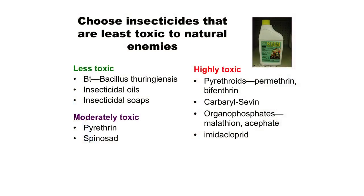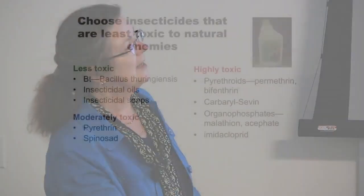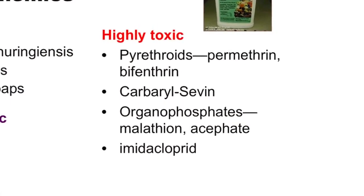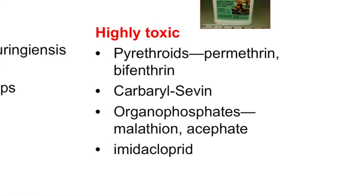In integrated pest management programs, if we have to use pesticides, we try to use the ones that are least toxic to natural enemies. Bacterial diseases of caterpillars like Bacillus thuringiensis, and insecticidal oils and soaps, are least toxic to natural enemies and are the first choice if effective. Next in line would be pyrethrin, a botanical product from the chrysanthemum daisy, and spinosad, another microbial. These are a little more toxic but shorter-lived. Highly toxic pesticides - pyrethroids, Sevin/carbaryl, organophosphates, or imidacloprid, which is a systemic insecticide - we try not to use these in IPM programs. Lots of people have very nice gardens that never use pesticides at all. Pesticides range in toxicity: soaps, oils, and Bacillus thuringiensis really don't have a toxic impact on the environment and are very benign.